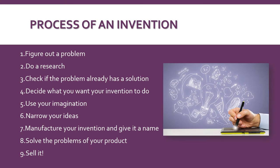First of all we're going to remember the process of an invention. First you have to figure out a problem, do a research, check if the problem already has a solution, decide what you want your invention to do, use your imagination, narrow your ideas, manufacture your invention and give it a name, solve the problems of your product, and sell it.